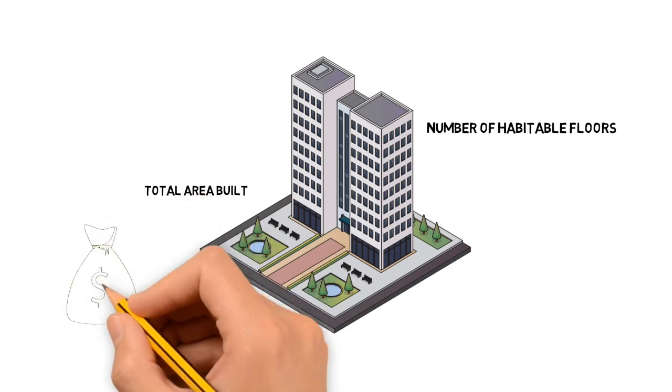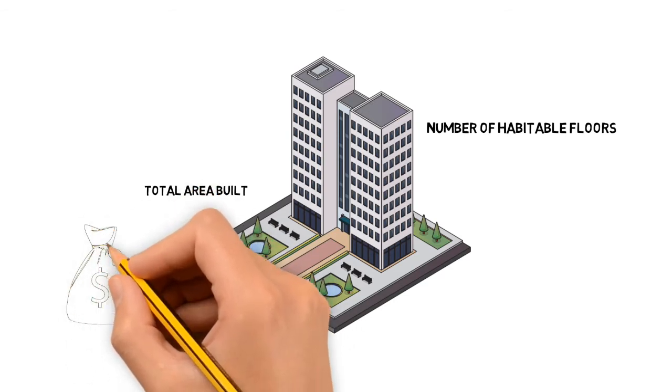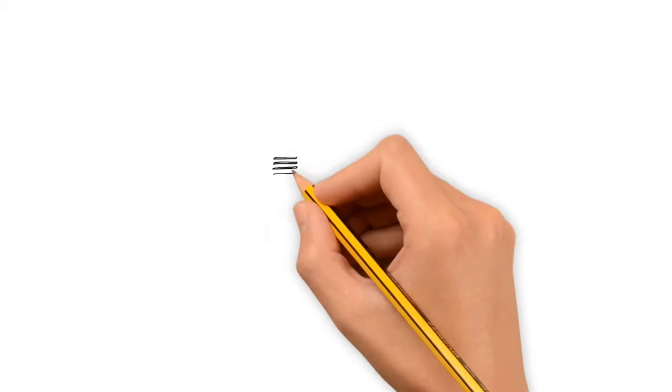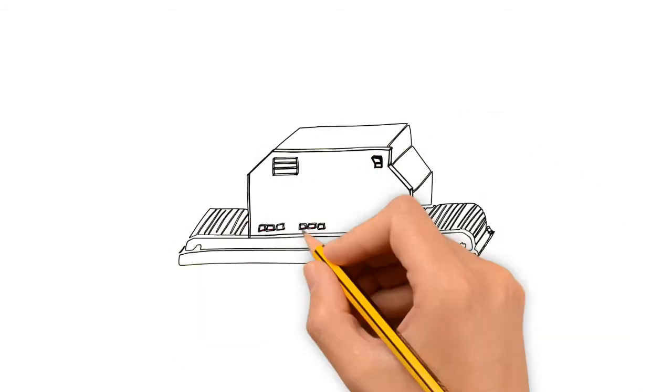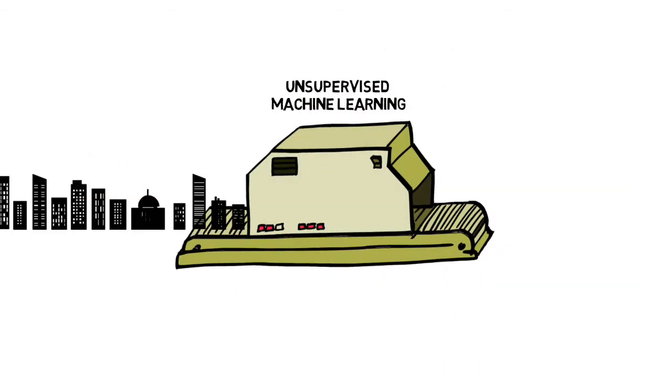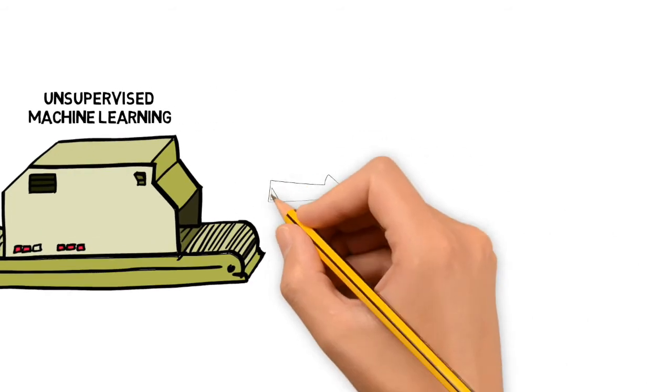An intuitive approach to tackle this problem is to assume that similar tax declarations should pay more or less the same amount of money. To find suspicious declarations, we apply a two-step process. First, using an unsupervised machine learning framework, we can make groups of similar buildings.